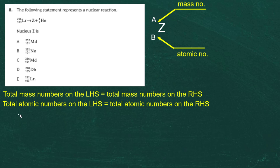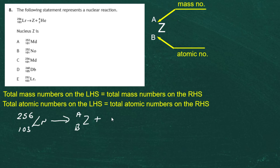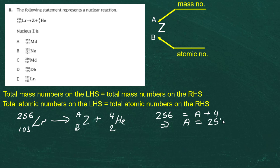We have 256-103-Lr reacting to give the missing nucleus Z with mass number A and atomic number B, plus 4-2-He, the helium nucleus or alpha particle. The total mass number on the left is 256, which equals A plus 4 on the right, so the missing mass number A is 252. We can now write Z-252.